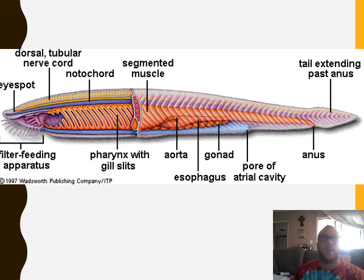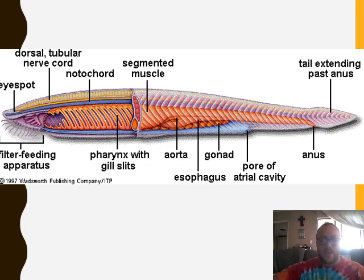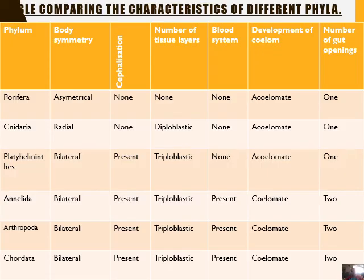The basic structure of all chordates includes an eye spot, filter-feeding structures, a pharynx with gill slits, a nerve cord, a notochord, segmented muscles allowing independent movement of body parts, and a tail extending past the anus. Many of our ancestors had this tail, and it is only in mammals that we start to lose it. Some humans have been noted to grow a sort of tail due to atavism — go and Google it, A-T-A-V-I-S-M. You need to fill out the comparison table on a nice big A4 sheet. Hope that was good, Grade 11s, and I will see you soon.